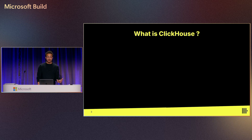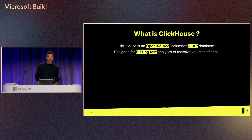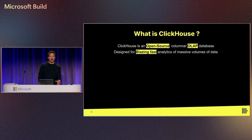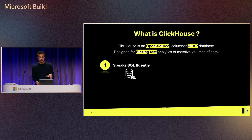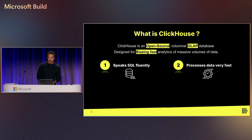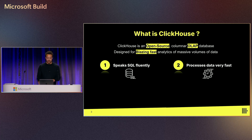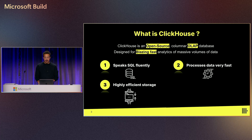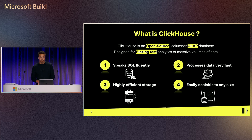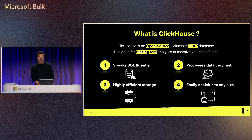So what is ClickHouse? Probably the best place to start. ClickHouse is an open source OLAP database designed for blazing fast queries on massive volumes of data. We speak fluent SQL to the ANSI standard. We're designed to ingest and query massive amounts of data extremely fast, with efficient storage and amazing compression ratios. Our architecture can scale to any shape or size with support for distributed queries, replication, sharding, multi-master, and cross-region support.